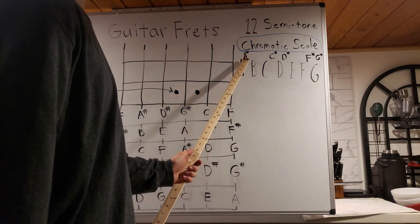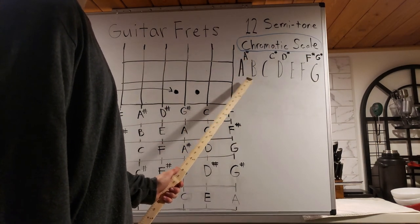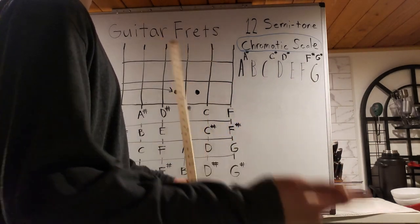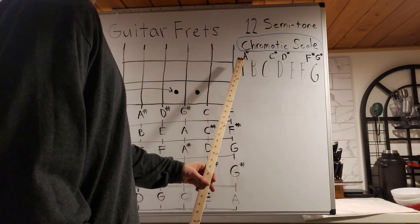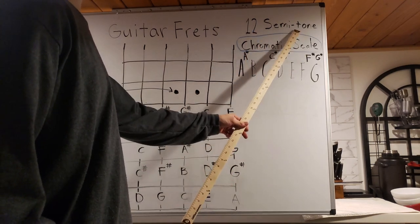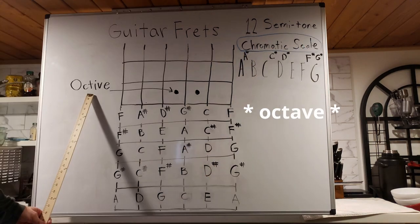But if you forget about the sharps and you just count A, B, C, D, E, F, G, you have eight notes right there. So that's where you get your eight note octave from. But once you start throwing in your sharps, you're using the chromatic scale, and you have 12 steps or 12 semitones in an octave.